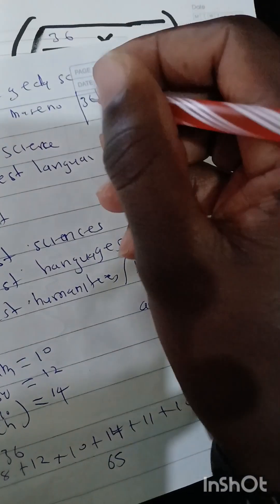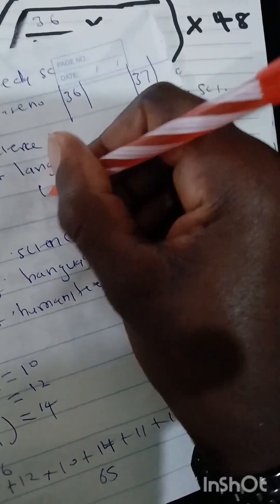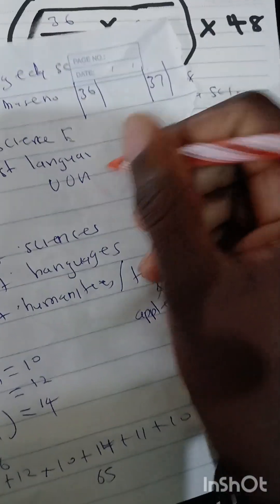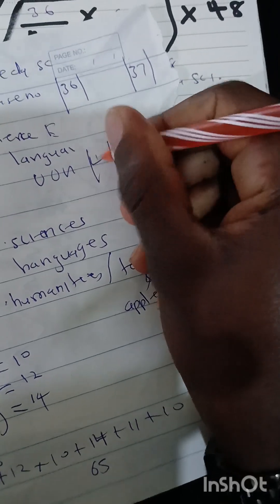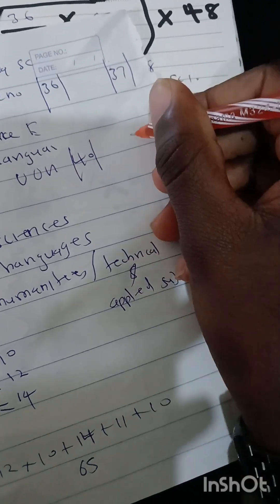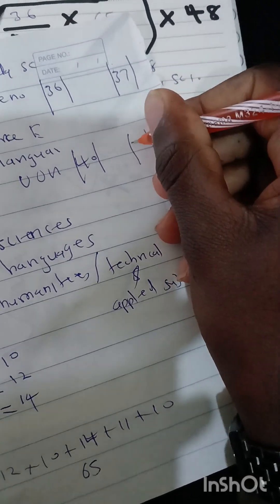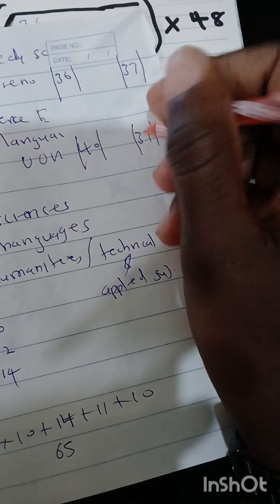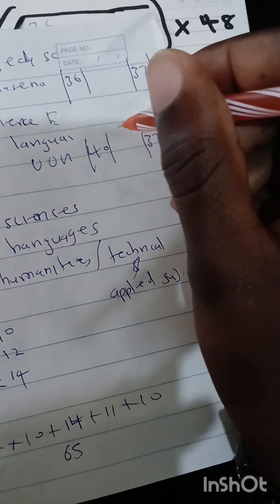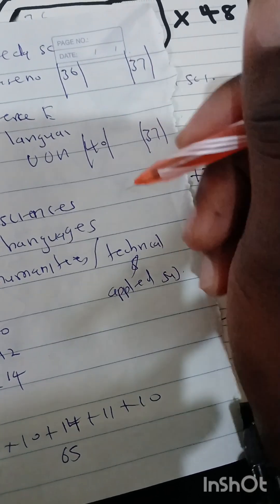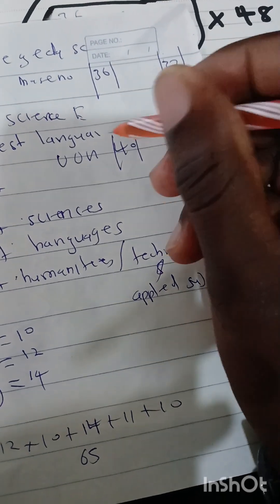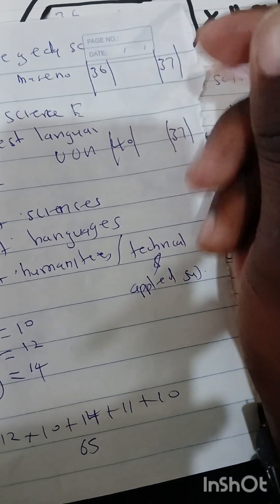But if we find that education science at University of Nairobi, the cluster points are 40 and the student's cluster weights are 37, it means the student cannot be placed at the University of Nairobi for education science because the cluster weights are less than those of University of Nairobi.